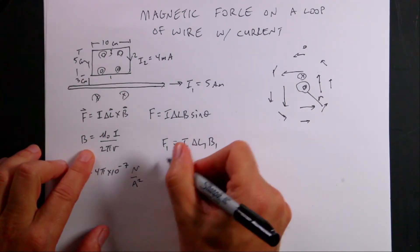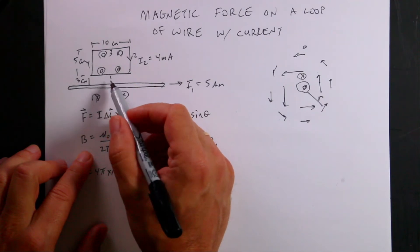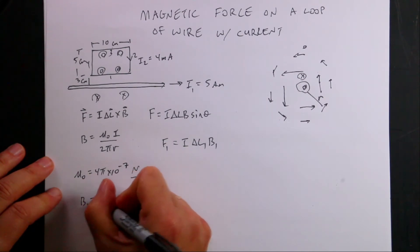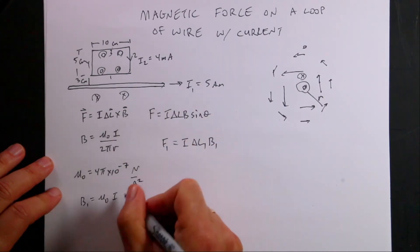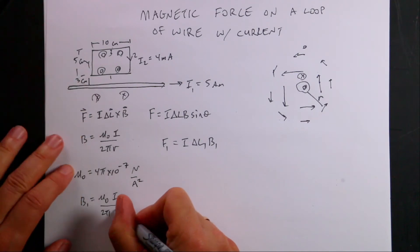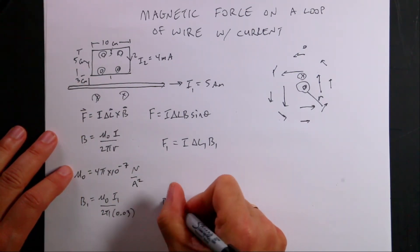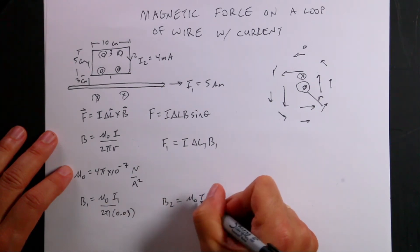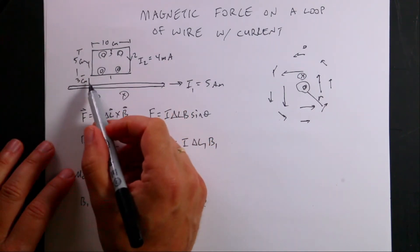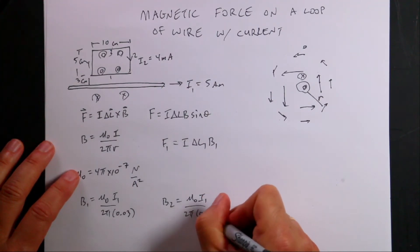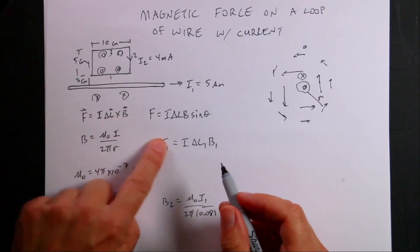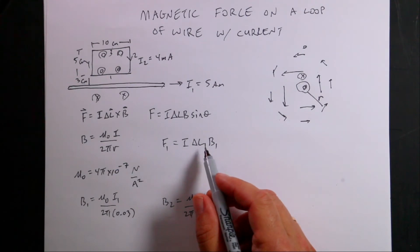So this force is going to be in the positive y direction. Let's write that as I delta L1, which is 10 centimeters, times B1. B1 is going to be mu-naught I1 over 2 pi times R1, which is 3 centimeters, 0.03 meters. The angle between the magnetic field and the current is 90 degrees. Sine of 90 is 1. So this is going to be in the y direction.